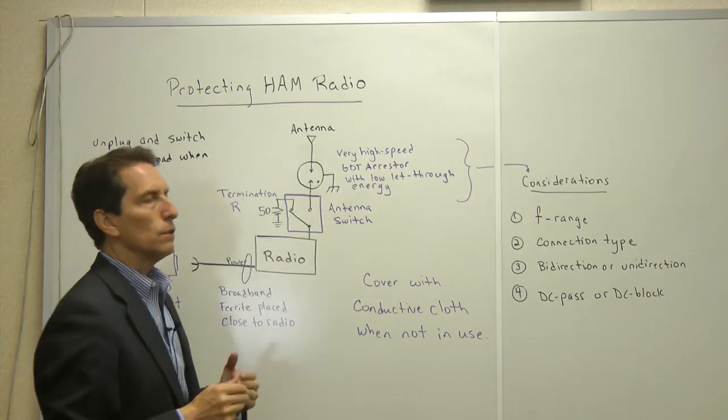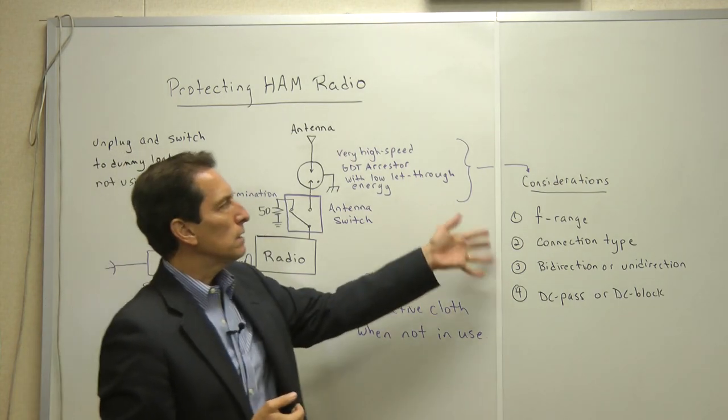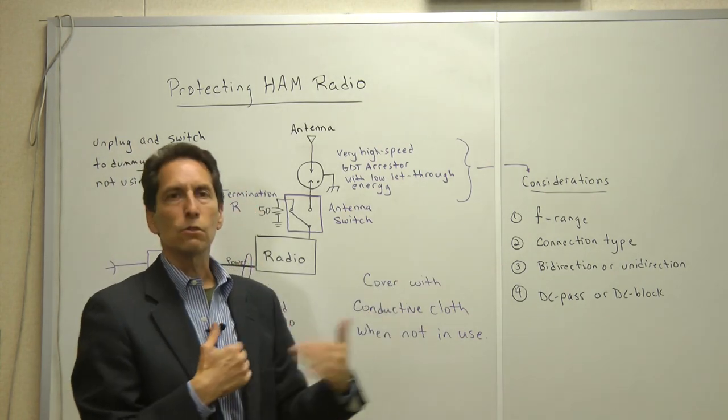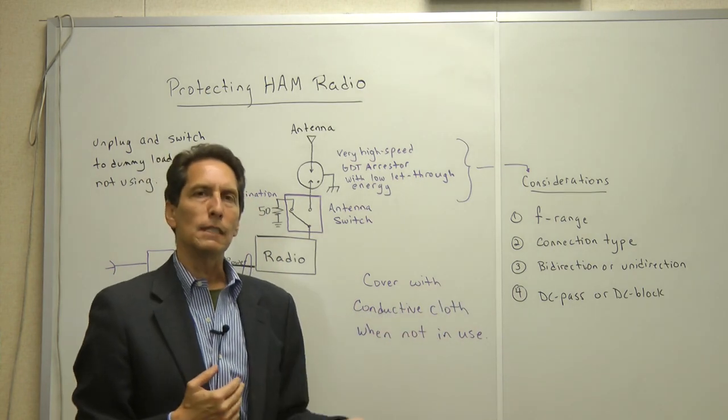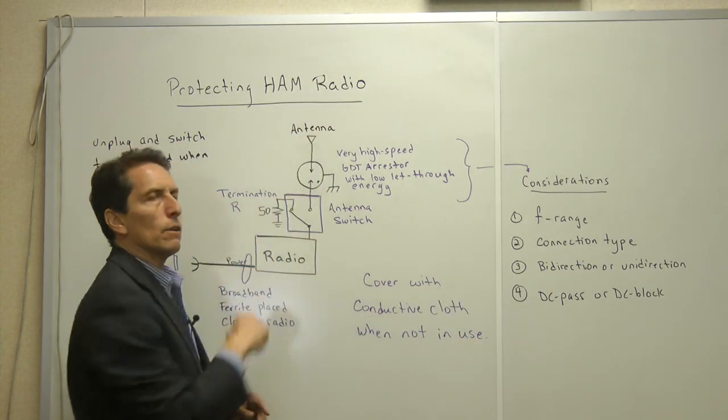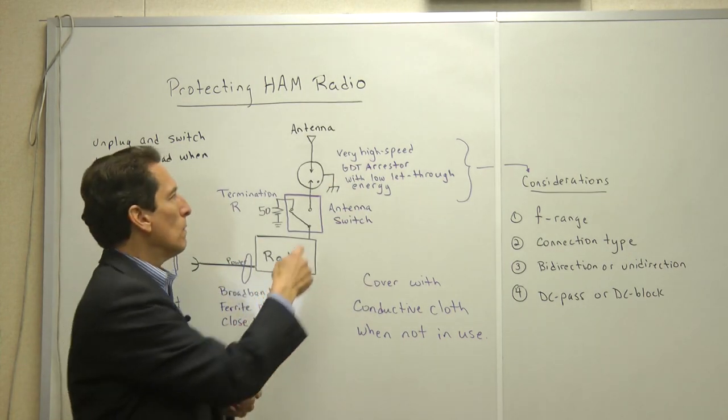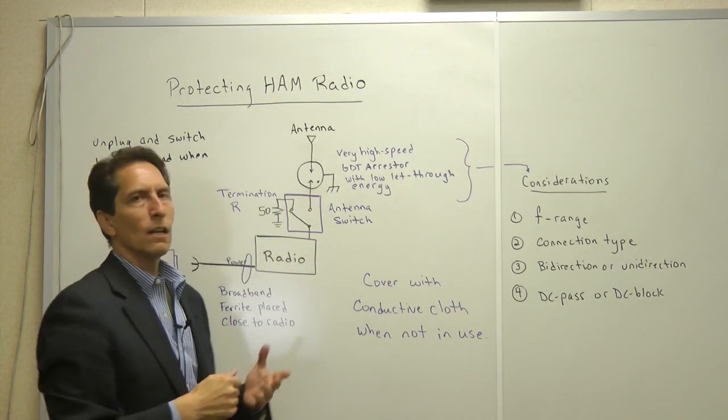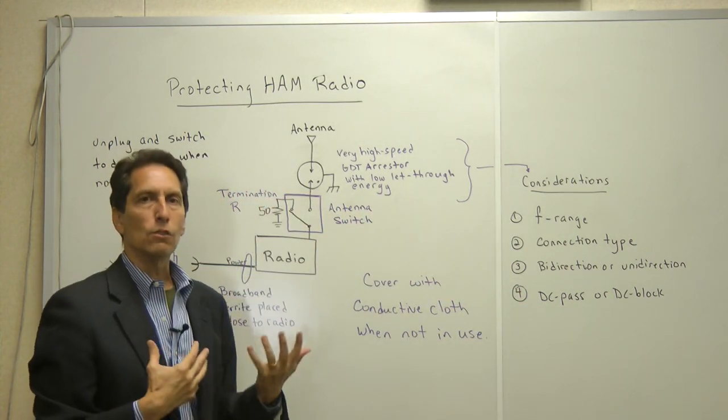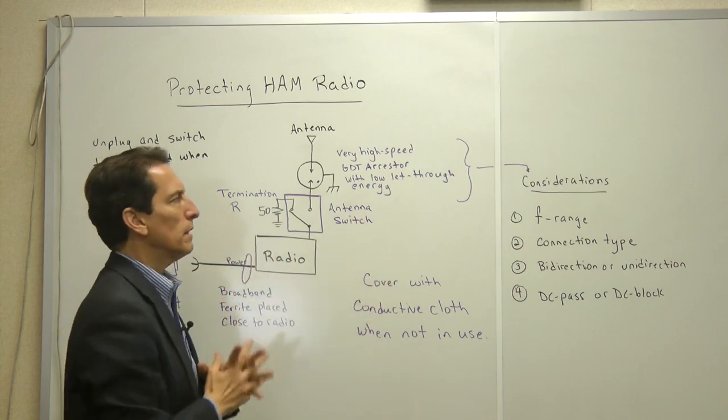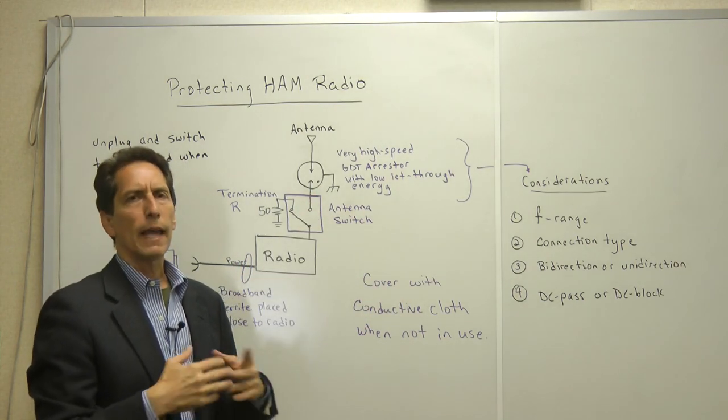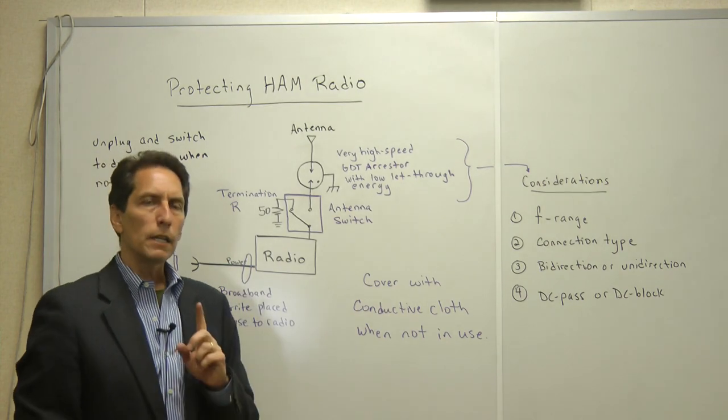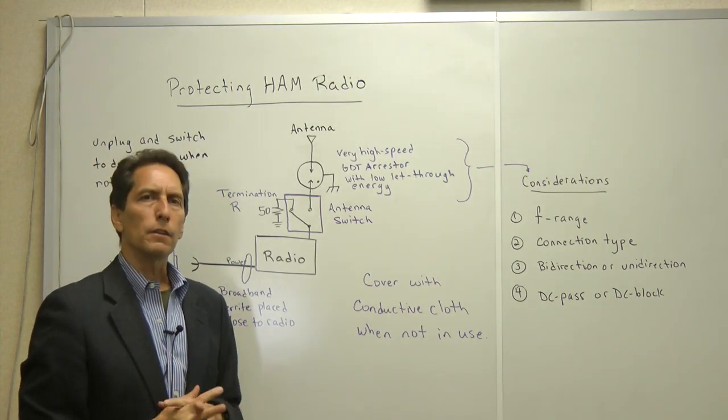So anyway, you want a very high speed gas discharge tube based arrestor and you want it to have very low let through energy levels. You don't want much energy to get past it and down into your radio system because radios are so sensitive to unwanted energy. So this is a key component, maybe the key component of the entire protection scheme. And I'm going to talk about a bunch of them that I looked at and one in particular that I recommend. Now if you don't like my recommendations, you can go out and shop your own and find one that you like. You want to consider a few things when you do that. You want to consider what the frequency range of that arrestor is, what connection types it has, is it bidirectional or unidirectional? And does it do a DC pass or DC block? Most of the time I don't recommend DC pass because by having a DC pass, you essentially prevent yourself from having a blocking capacitor in the unit.